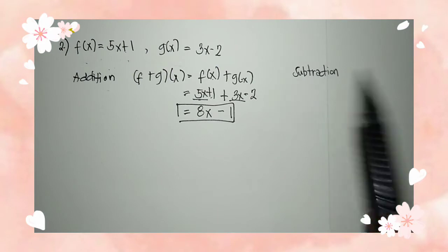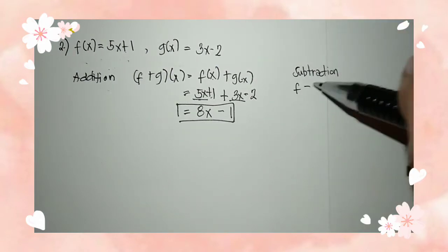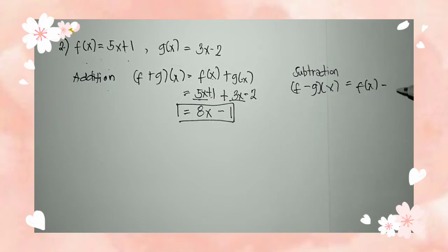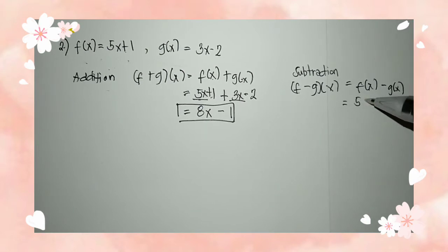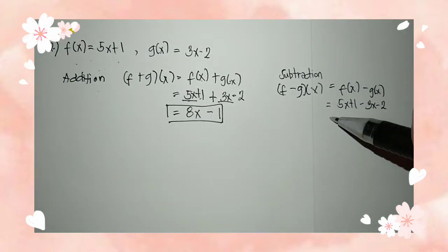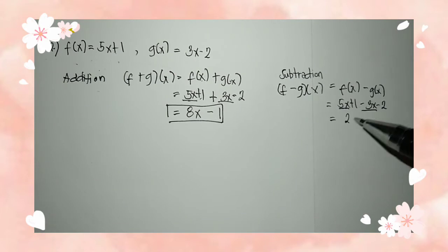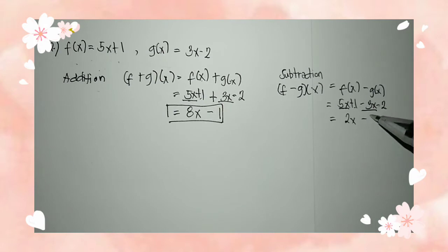Next is the subtraction. We have f minus g of x is equal to f of x minus g of x. So we have 5x plus 1 minus 3x minus 2. We have to combine the like terms: 5x minus 3x is equal to 2x. Then 1 minus 2 is equal to negative 1. So the answer is 2x minus 1.